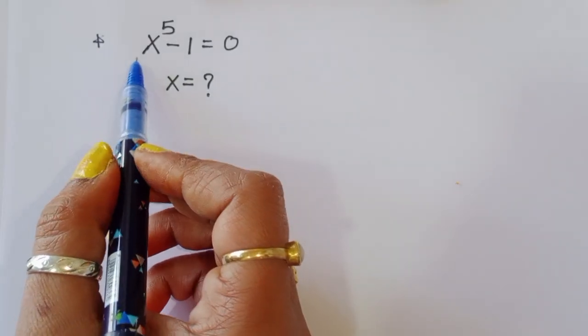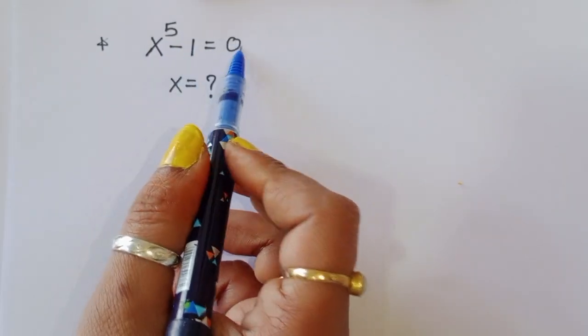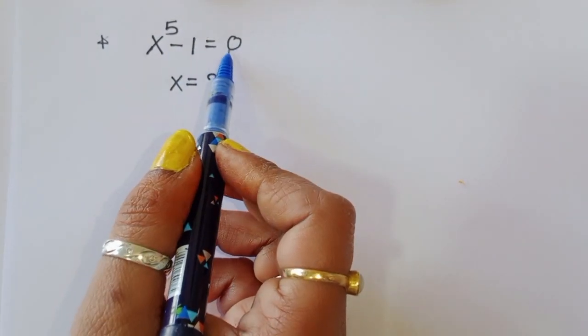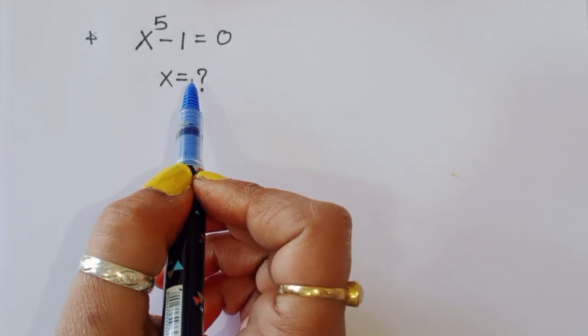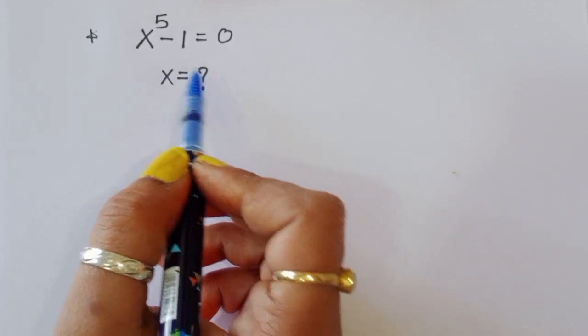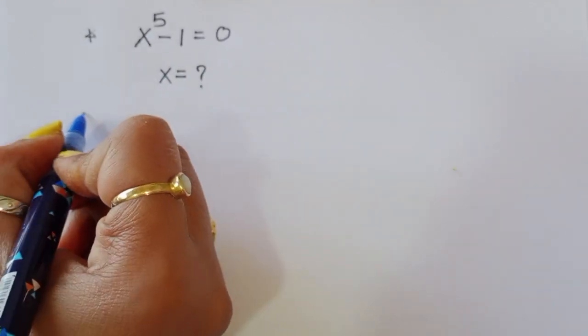The question is: given x^5 - 1 = 0, we have to find out the value of x. Let's see the solution.